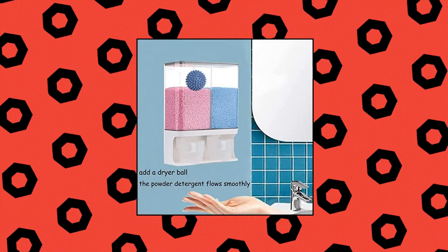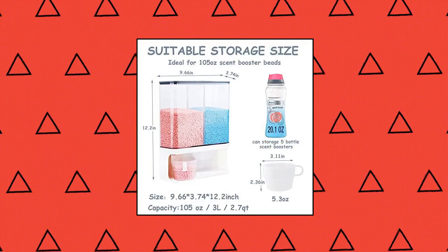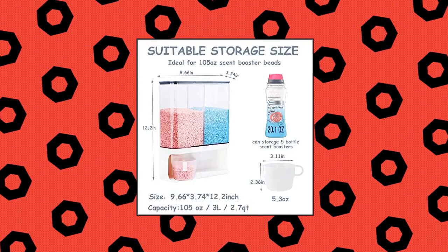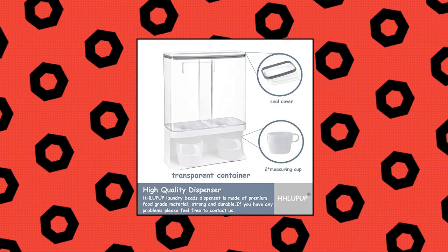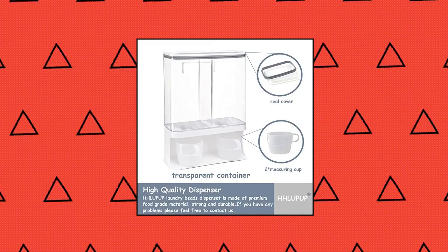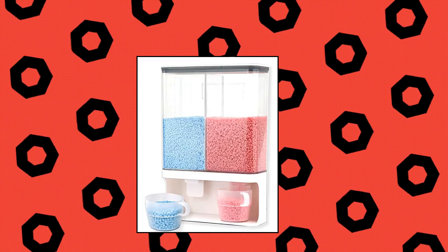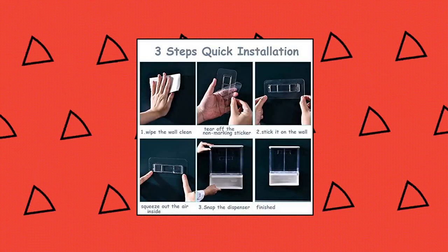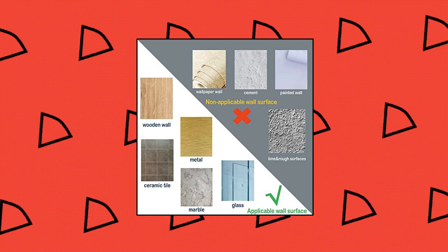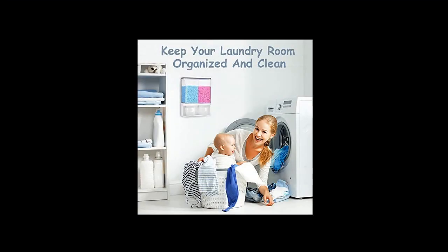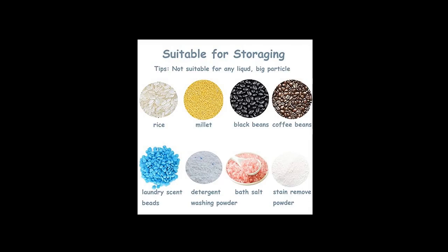Hliupup 105 ounces laundry scent booster beads dispenser. Tidy and space-saving. Messy laundry room will make you feel at a loss when washing. Our dispenser is perfect for organizing your laundry scent beads. Let you stay away from busyness and get a tidy laundry room. Easy to use, put two different scent boosters in. Just a small push, it comes out. You can easily get it without a mess. 1-minute quick installation, easy assembly and drill-free installation.